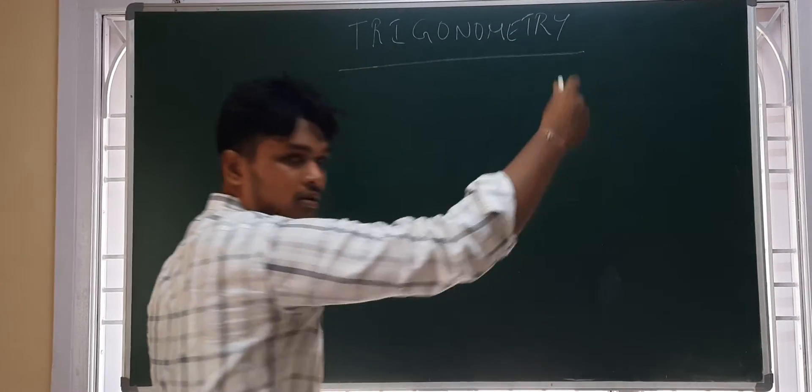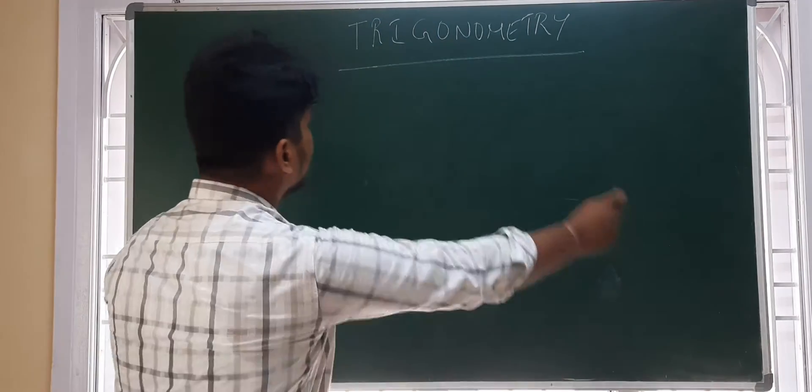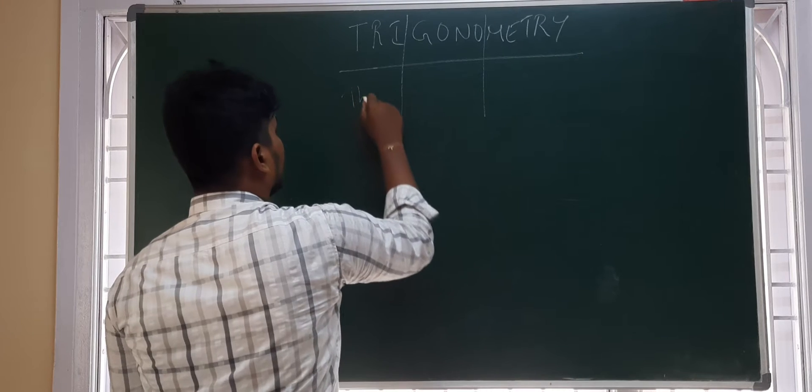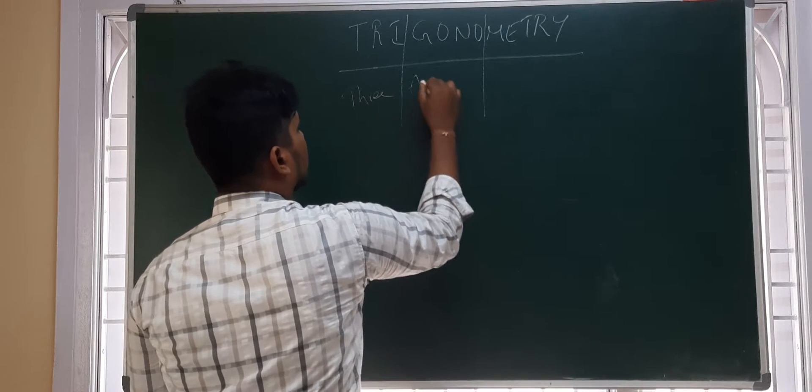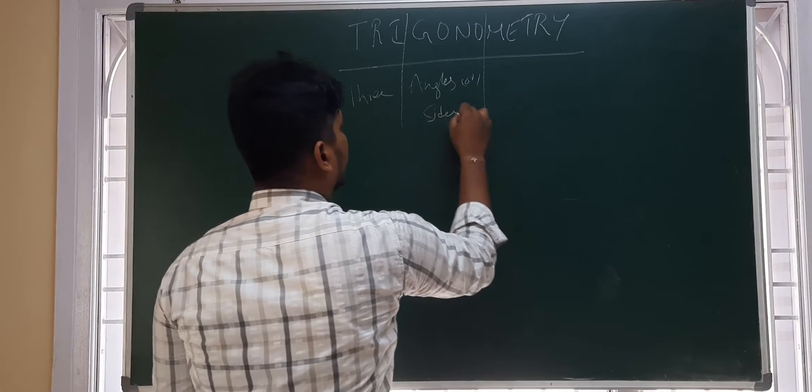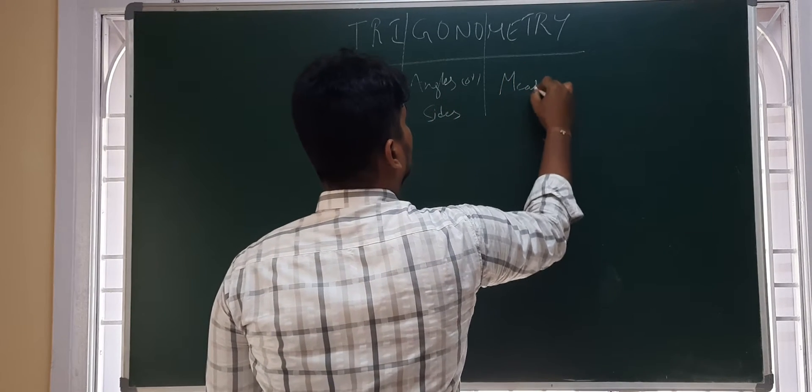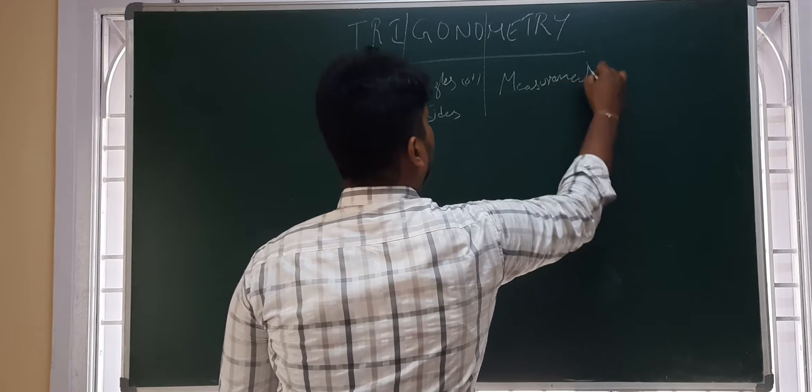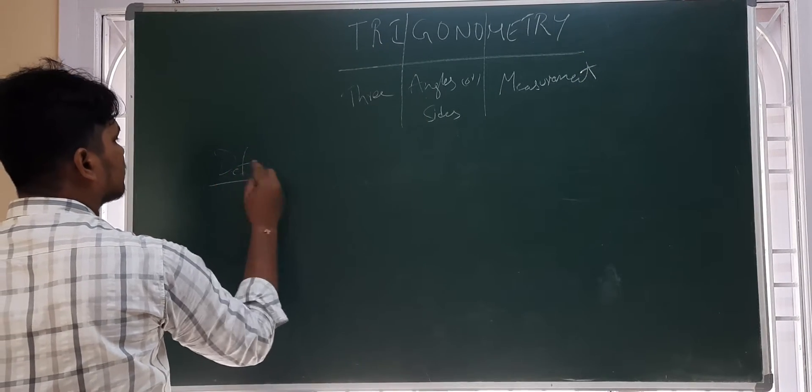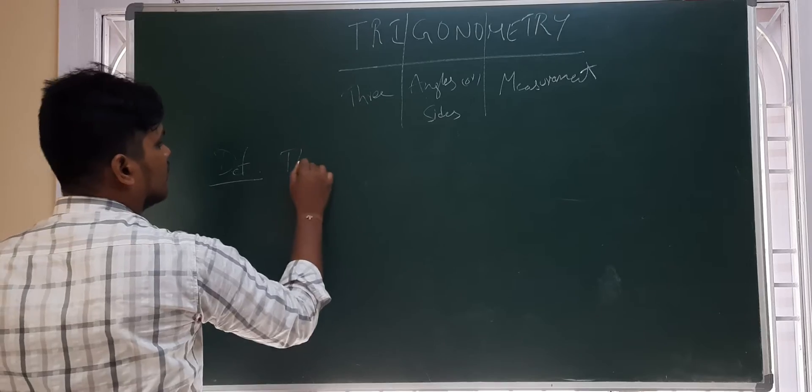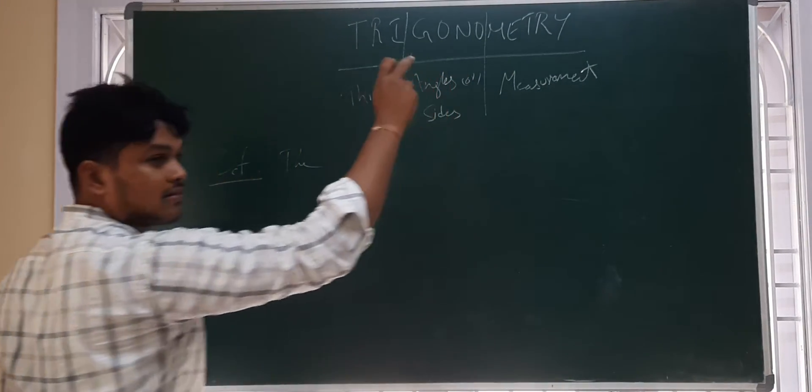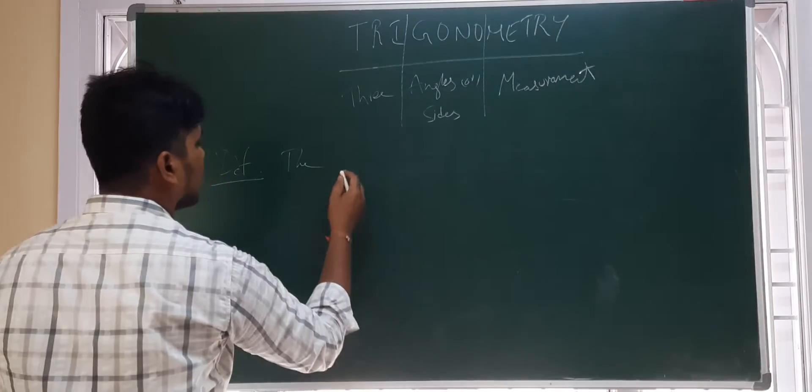Trigonometry. What is trigonometry? Let me divide this word trigonometry into three parts. Tri which means three, gono which means angles or sides, metry which means measurement. What does the definition tell us? The measurement of three sides and three angles of a triangle is called trigonometry.